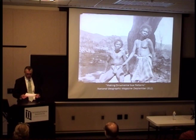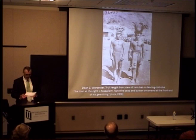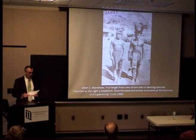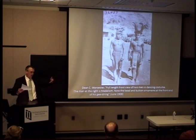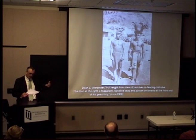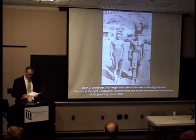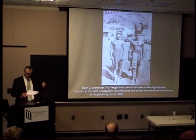Although the people of no man's land didn't neatly fit into any of Worcester's categories, his classification scheme for his photographs demanded that they do so. For example, a photograph taken in June 1908 is part of a series of Bontok Igorots of Lubuagan, category 8F — though as of yesterday, a post-it note in the University of Michigan Museum of Anthropology says that these are in fact Kalinga. The specific caption in the Newberry Library index reads: 'full-length front view of two men in dancing costume. The man at the right is Madalom. Note the bead and button ornaments at the front end of his G-string.'